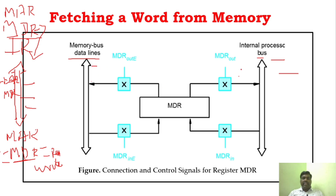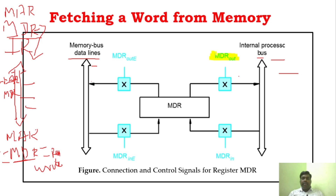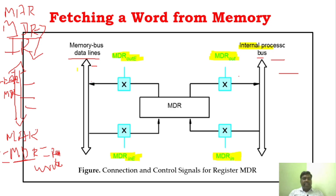You can clearly see it is mentioned as MDRout and MDRin — these two control signals are for the internal bus. Similarly, there is MDRoutE and MDRinE — the 'E' stands for external — and these connect to the external bus. For every register there are control signals, as you have already seen in the last video.